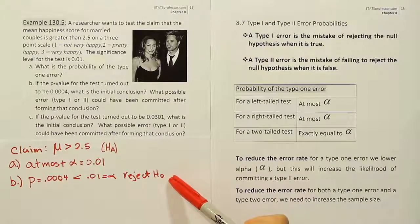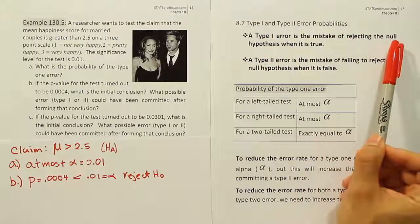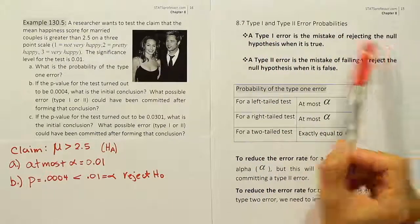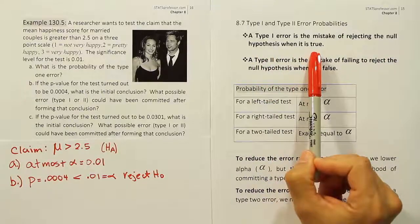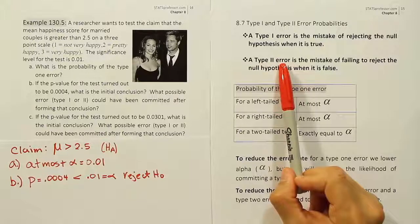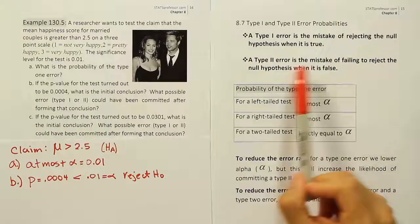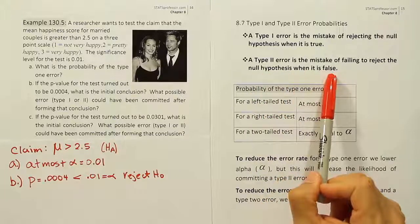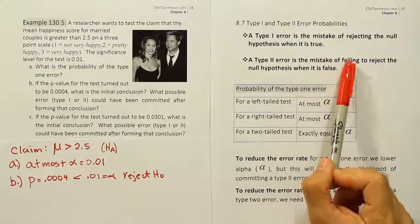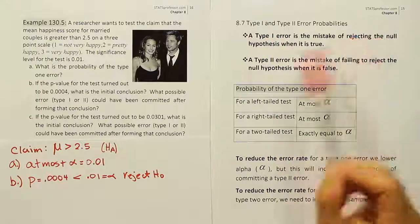So please remember that a prerequisite of committing the type 1 error is that you first reject the null, and then it becomes a type 1 error if that null was actually true. And same with the type 2, it's a similar idea. The only way you could commit the type 2 is if you don't reject, right? But then it turns out that the null is false, and you should have.